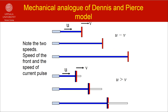Let me show you a mechanical analog of the Dennis and Pierce model. Consider a uniform water jet that shoots forward with speed u. In front of the jet there is a target that travels with speed v. If u equals v, then the water jet travels forward unhindered and without any distortions. However, if u is greater than v, then the water jet strikes the target and water will be spilled sideways at the target. In the model, the water jet represents the upward moving current and the target represents the upward moving return stroke front.